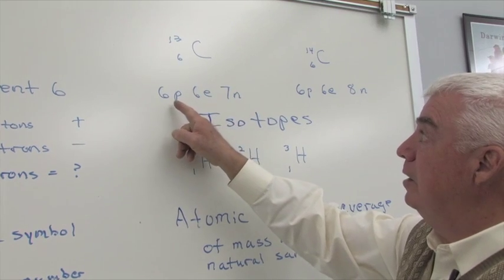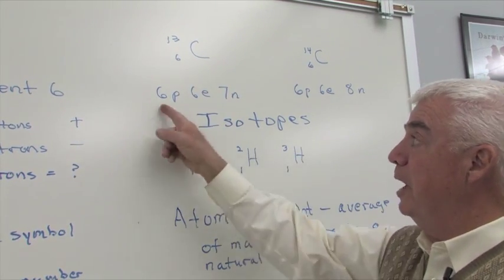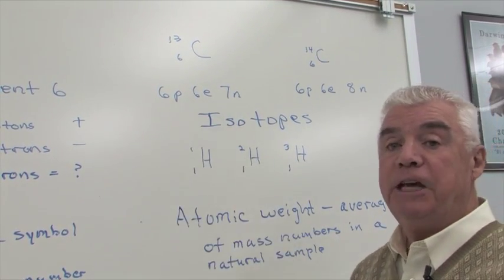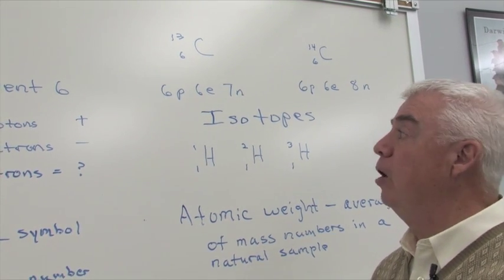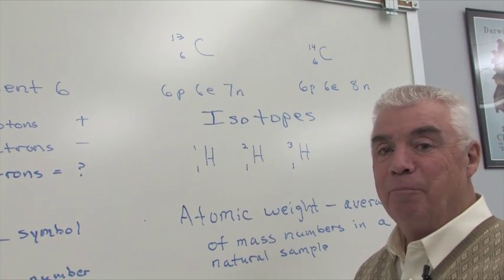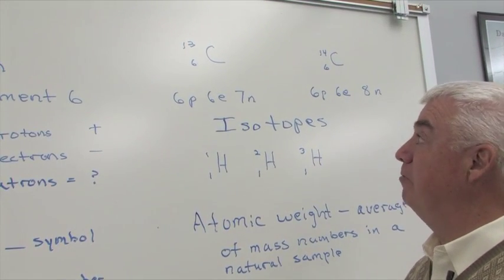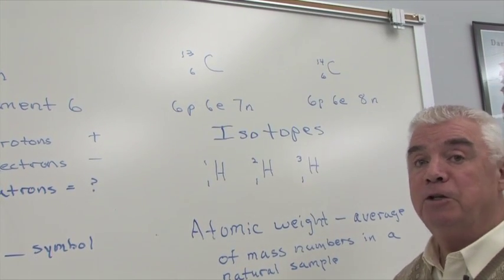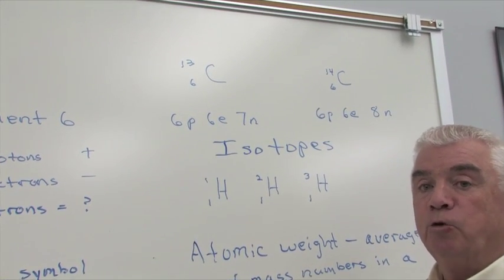In this particular one, we have six protons, six electrons. As a matter of fact, all atoms of carbon would have to have that. If it were a different sequence number, a different number of protons, it would be a different element. And the difference between these two numbers is the number of neutrons. So 13 minus six tells us that we have seven neutrons. Over here, the difference between the lowercase number and uppercase number is eight. We have eight neutrons.